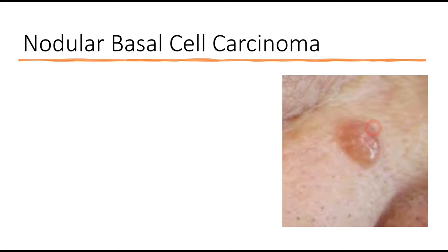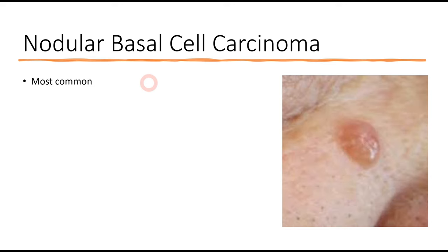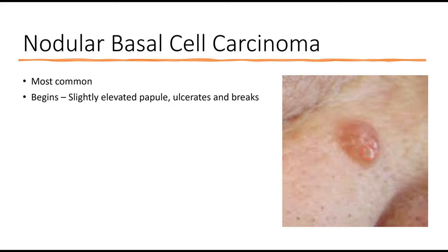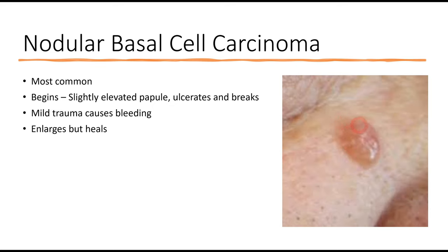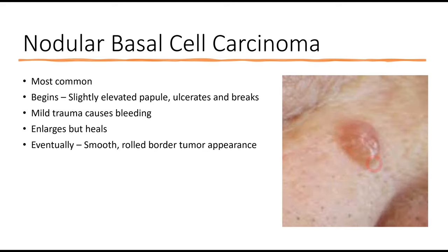In this clinical picture, you can appreciate some elevation — a papule or plaque-like lesion that appears abnormal compared to the adjacent area. This is nodular basal cell carcinoma, the most common subtype. It begins as a slightly elevated papule which will eventually ulcerate and break, leading to bleeding — for example, with minor trauma touching this area of skin — and then it starts to heal. After a certain period, the ulceration becomes smooth with rolled margins, giving us an indication that the patient might have basal cell carcinoma.